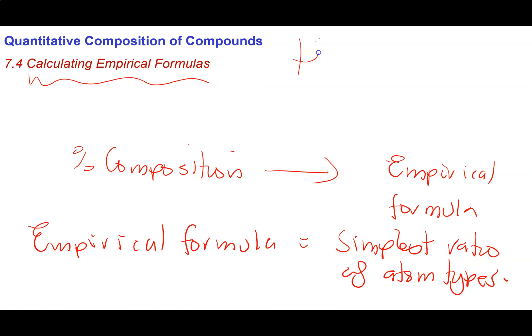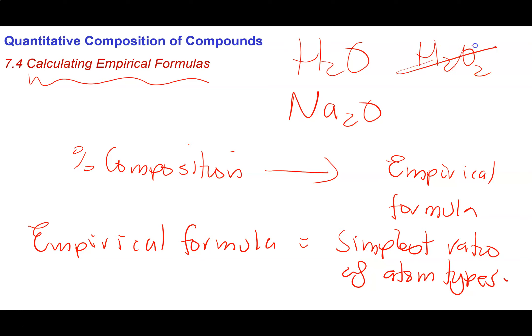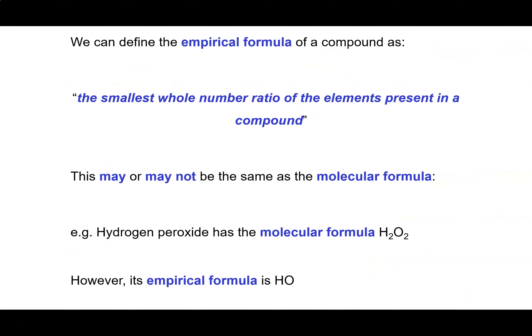So if I had something like H2O, that would be the empirical formula. But if I had something like H2O2, that would not be an empirical formula because we could simplify the ratio of atom types. We can define the empirical formula of a compound as the smallest whole number ratio of the elements that are present.